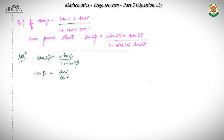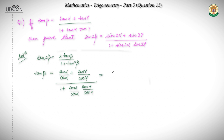I will convert tan α to sin α upon cos α, and tan γ to sin γ upon cos γ. When I solve this equation I get: sin α cos γ plus cos α sin γ, upon cos α cos γ plus sin α sin γ.